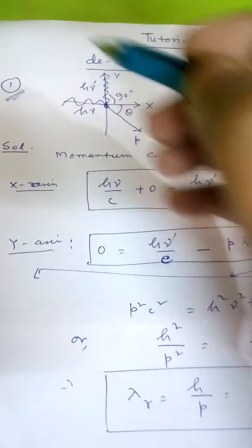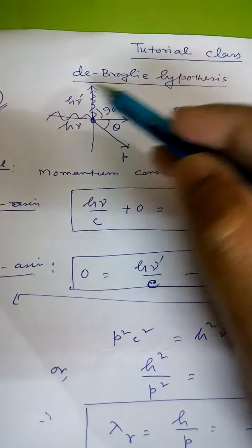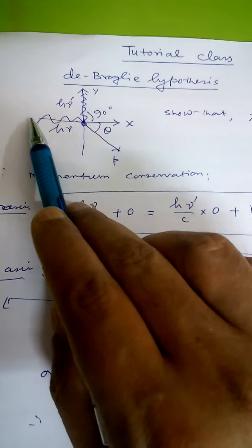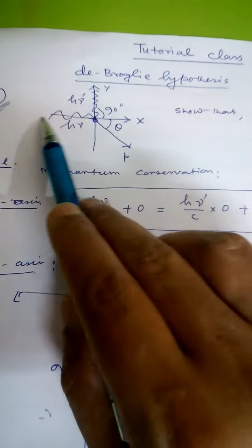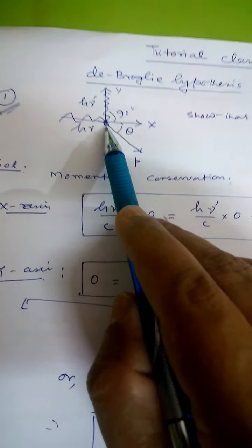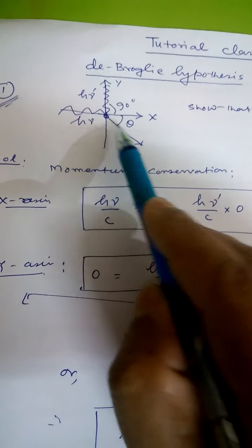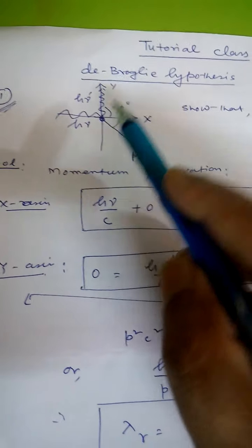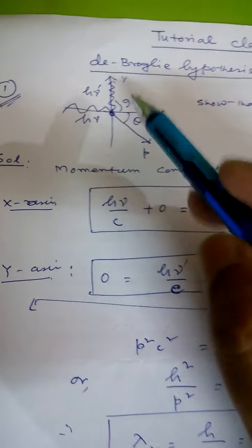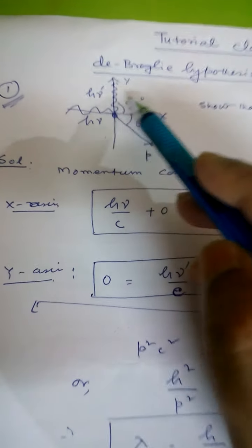Let us discuss our first problem. Let us take this figure. In this figure, this is an incoming X-ray having frequency nu and wavelength lambda. This is the electron of a carbon atom — just like the Compton effect. So this is elastic scattering. After scattering, the outgoing X-ray will be moving along the Y-axis and this is the direction of the recoil electron. So this is a special case of the Compton effect.